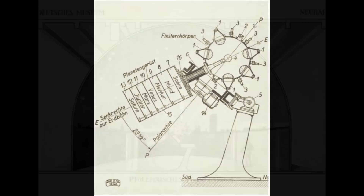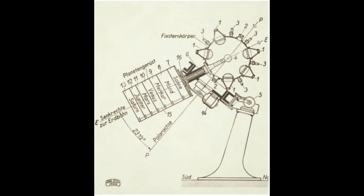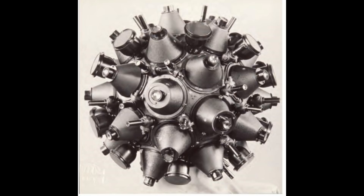From the Zeiss Company diagram, we see that the cylinder on the left side of the projector was designed to project points of light for the sun, moon, Mercury, Venus, Mars, Jupiter, and Saturn as they moved across the night sky in the plane of the ecliptic. The projector head on the right is the star-filled projector ball, with each separate projector lens used to display a fixed section of the stars in the night sky.